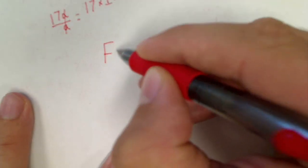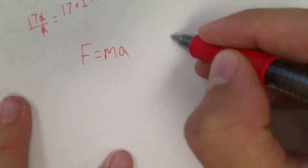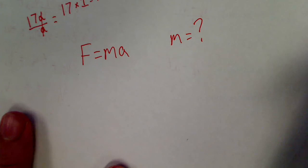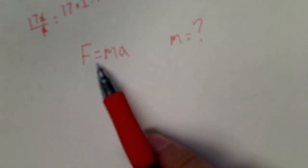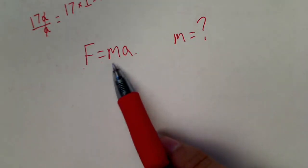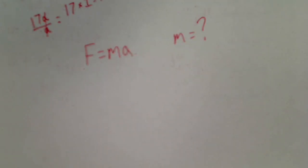And I'm trying to solve for M. I want to know what M equals. Okay, this formula is equals. F is the same thing as MA. Those two quantities are identical. I can interchange them, no problem.